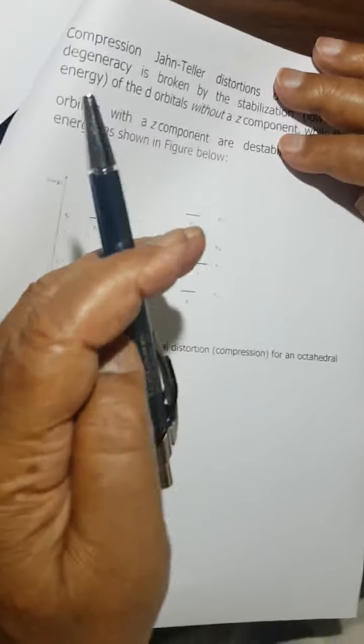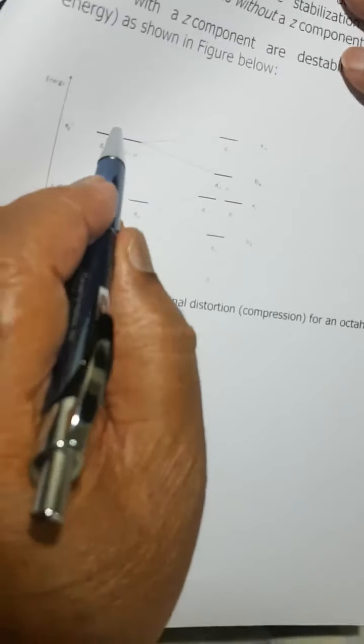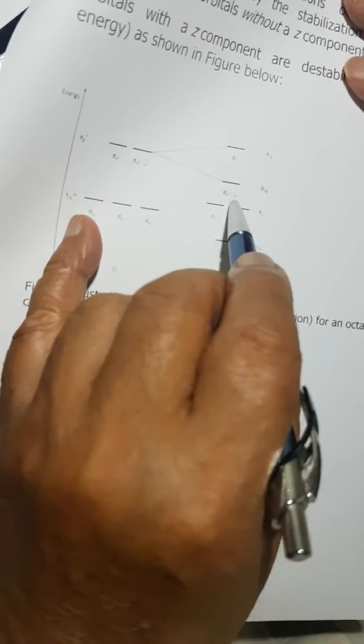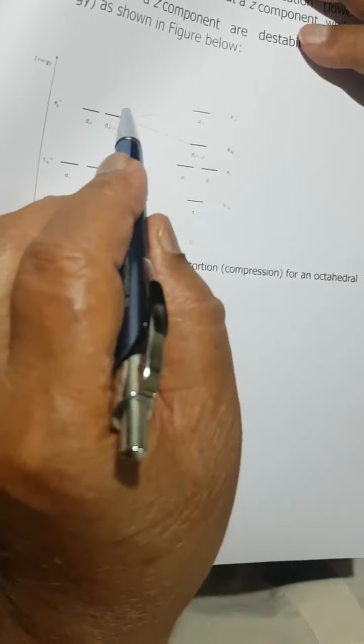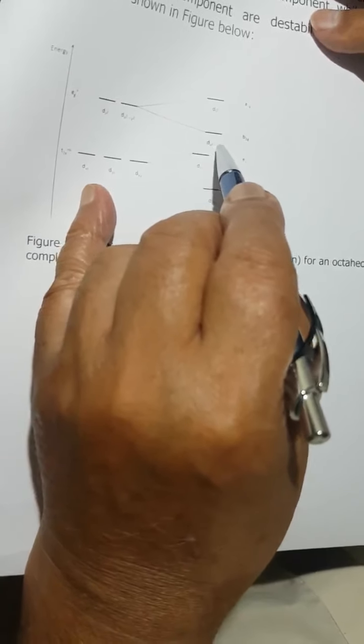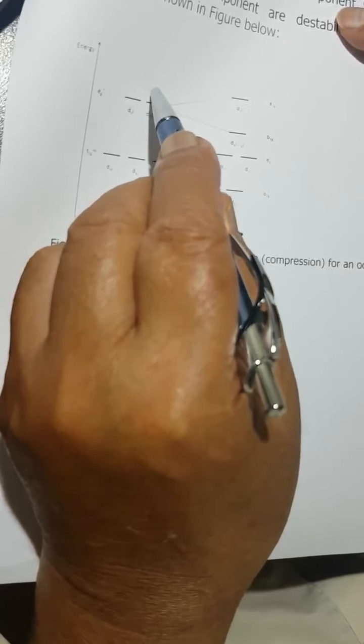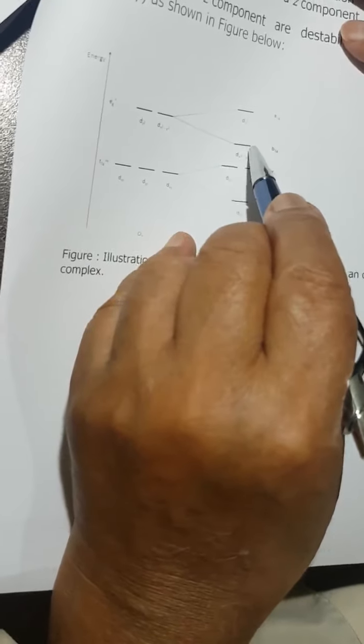Before, it was the dz² orbital which had one or two electrons, so the z direction was elongated. Here, the dx²-y² electron must be present, so it comes down.